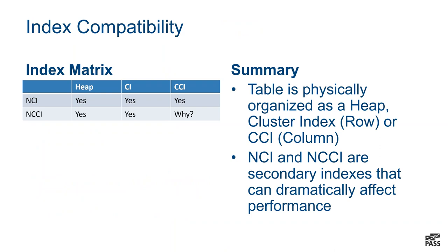In 2016, a lot more of those limitations are removed. Basically, you can use anything with anything. Across the top, the physical organization is either going to be a heap, a clustered index, or a clustered column store index — those three ways are how your data is physically organized. Then you can have your non-clustered index or a non-clustered column store index on top of any of those. This gives us great flexibility and power when thinking about the best way to access data in our tables.